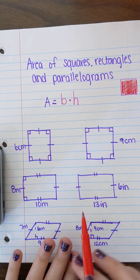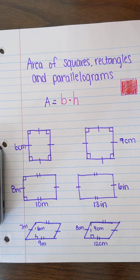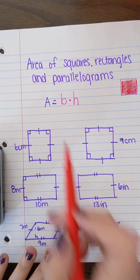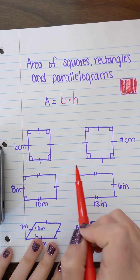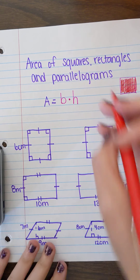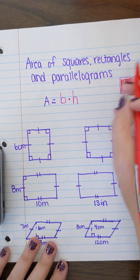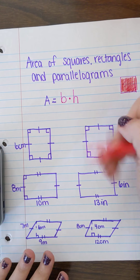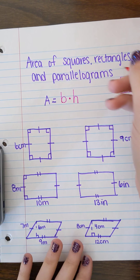For all of these shapes, we're very comfortable with finding the area of a square and a rectangle. You're going to be finding the base times the height. The base is that bottom and the height is how tall something is.